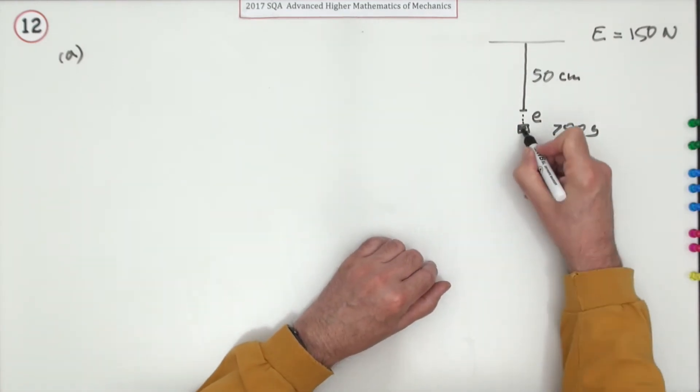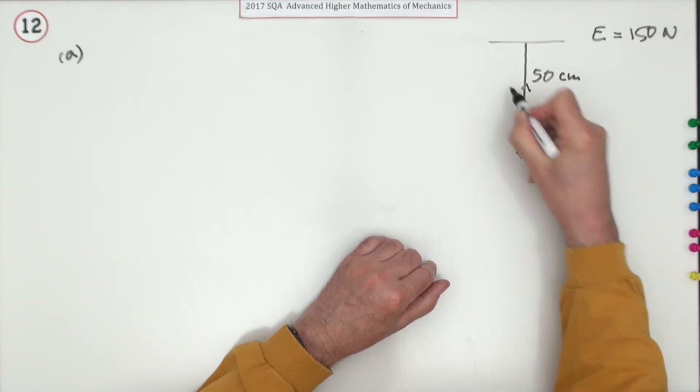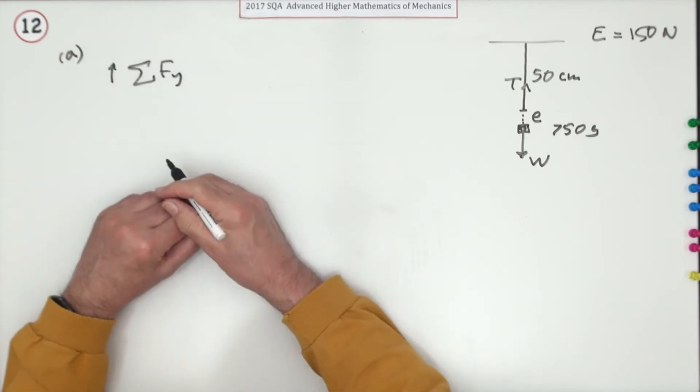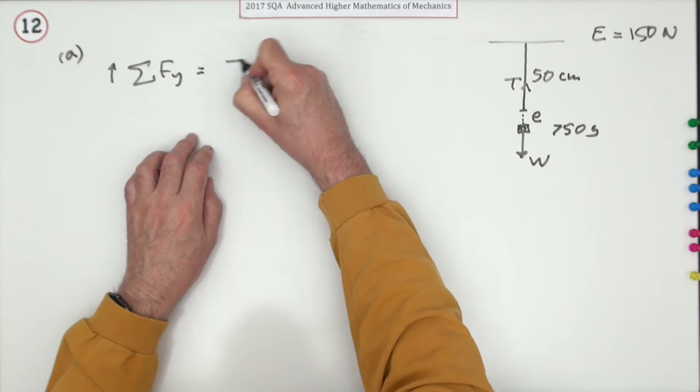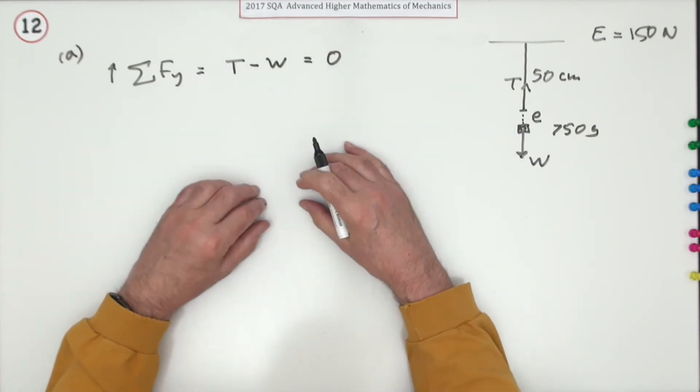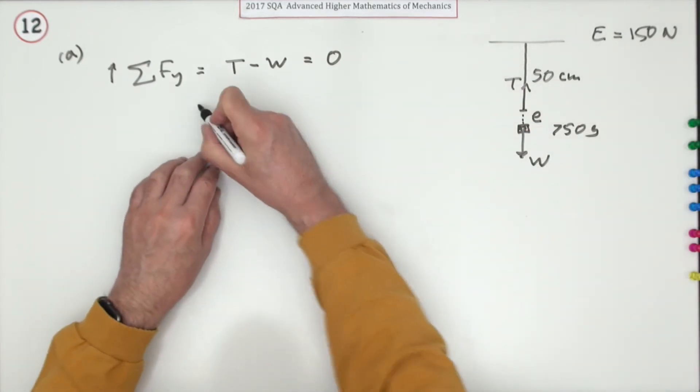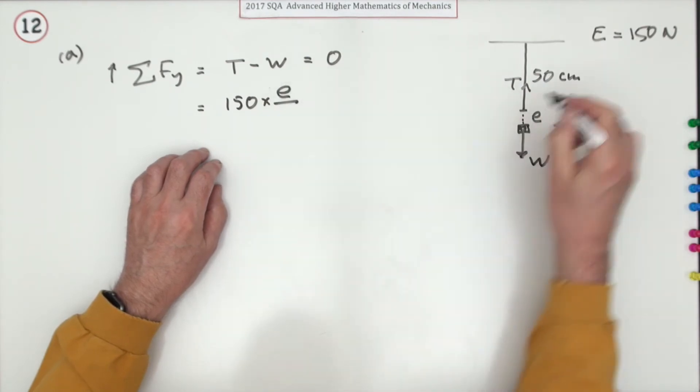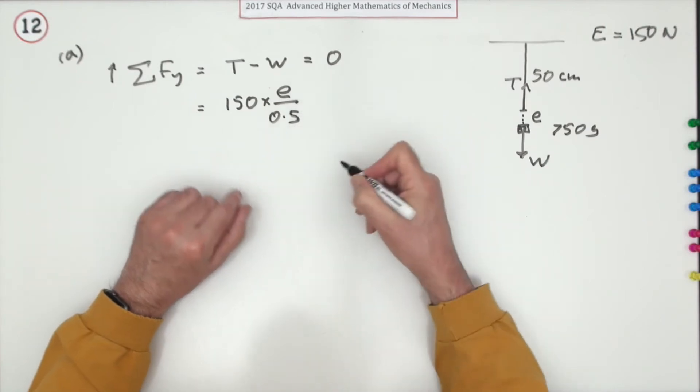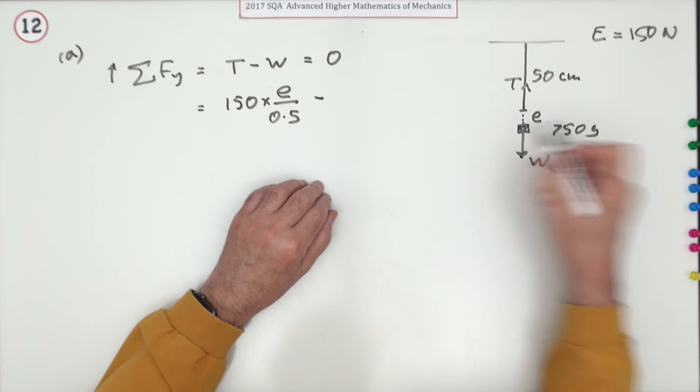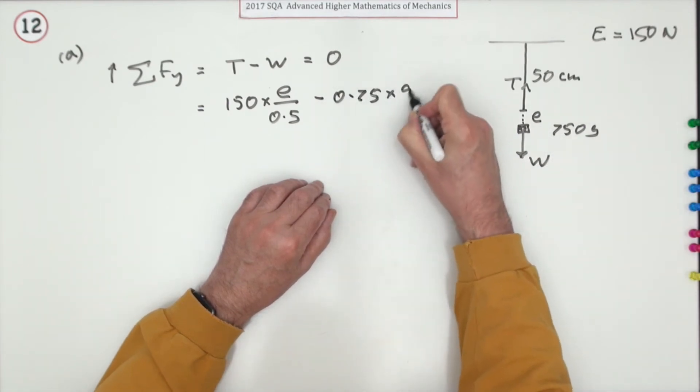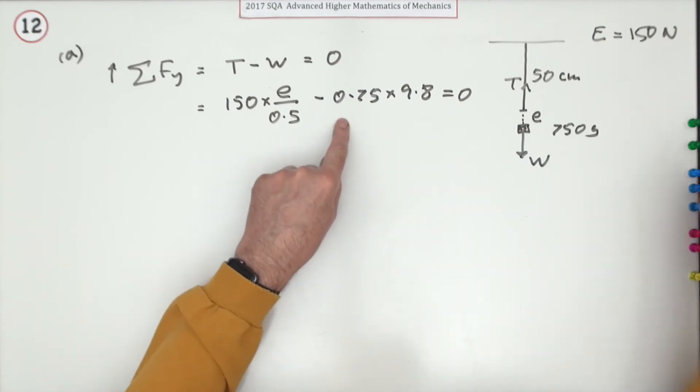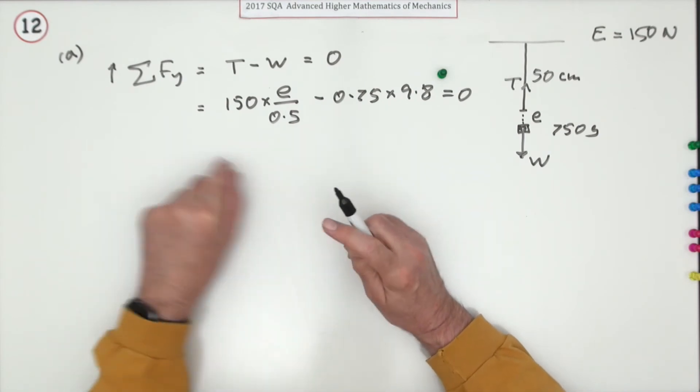So model this situation for equilibrium. There's the weight of the object and there's the corresponding tension in the string. Taking the sum of the forces in the y direction as upwards, we've got the tension in the string minus the weight should come to zero because it's not moving, it's in equilibrium. The tension in the string will be given by Hooke's law: 150 times the extension divided by the original length 0.5. The weight will be the mass 0.75 times 9.8, and that should come to zero. There's only one unknown, you can find e from that. The first mark is for considering the balanced forces, and the second mark is just for working it out.